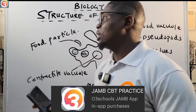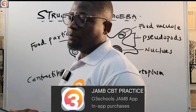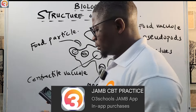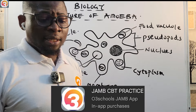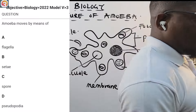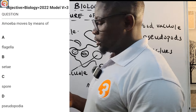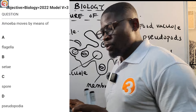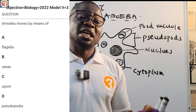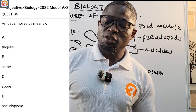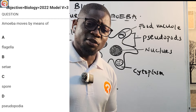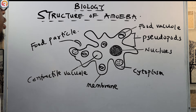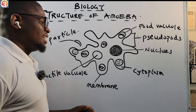Let us now go to what we have today — the structure of amoeba. But before we do that, let's look at a question from the app. This is a 2022 question number three: 'Amoeba moves by means of what? A) flagella, B) cilia, C) spore, D) pseudopodia.' We'll come back to this question at the end of the class.